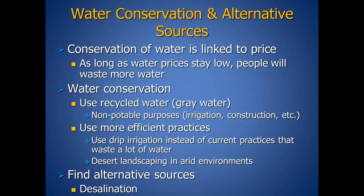Other efficient practices include desert landscaping in arid environments — rocks and drought-resistant native vegetation that don't need much water — rather than grass. If conservation and recycled water aren't enough, we need alternative sources. Desalination takes seawater, removes dissolved solids, and produces fresh potable water, but it requires a lot of energy and is fairly expensive.